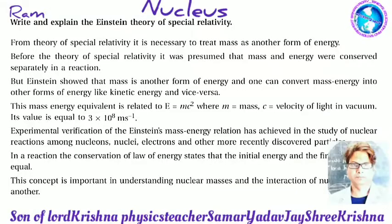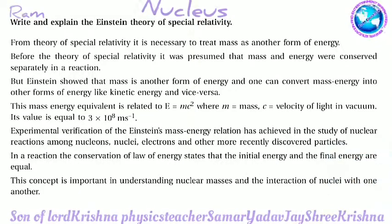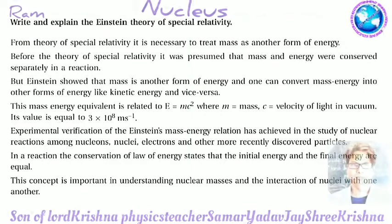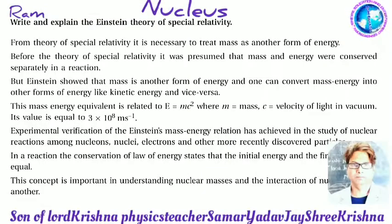Write and explain Einstein's theory of special relativity. From the theory of special relativity it is necessary to treat mass as another form of energy. Before the theory, mass and energy were presumed to be conserved separately in a reaction. But Einstein showed that mass is another form of energy, and one can convert mass-energy into other forms of energy like kinetic energy and vice versa.